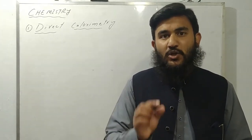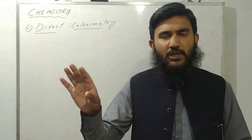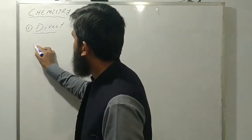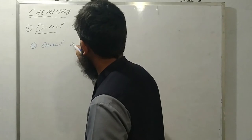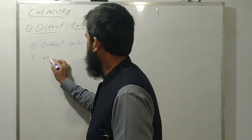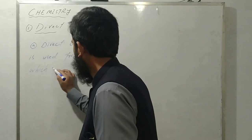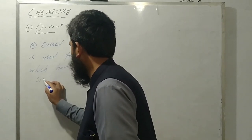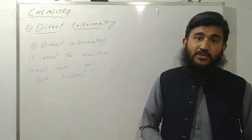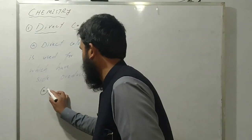Direct calorimetry un reactions ke liye use kiya jaata hai jo reaction complete ho without any side product — ke jo major product ho wahi bane, side product na bane. Un reactions mein hum direct calorimetry use kar sakte hain. Yeh pehli aur important baat aapne zehan mein rakhni hai: direct calorimetry is used for reactions which have no side products.